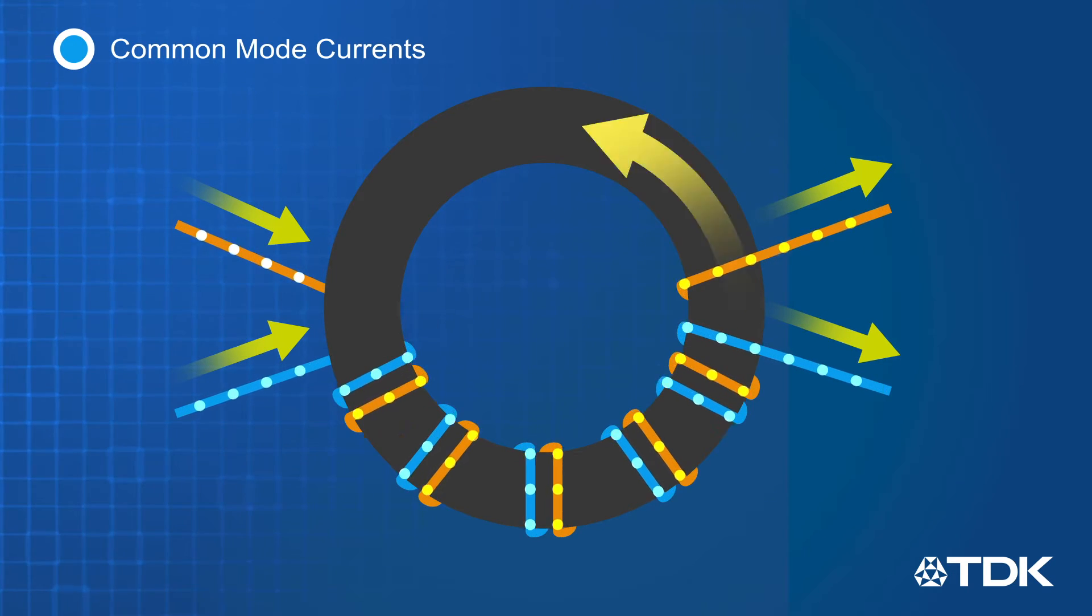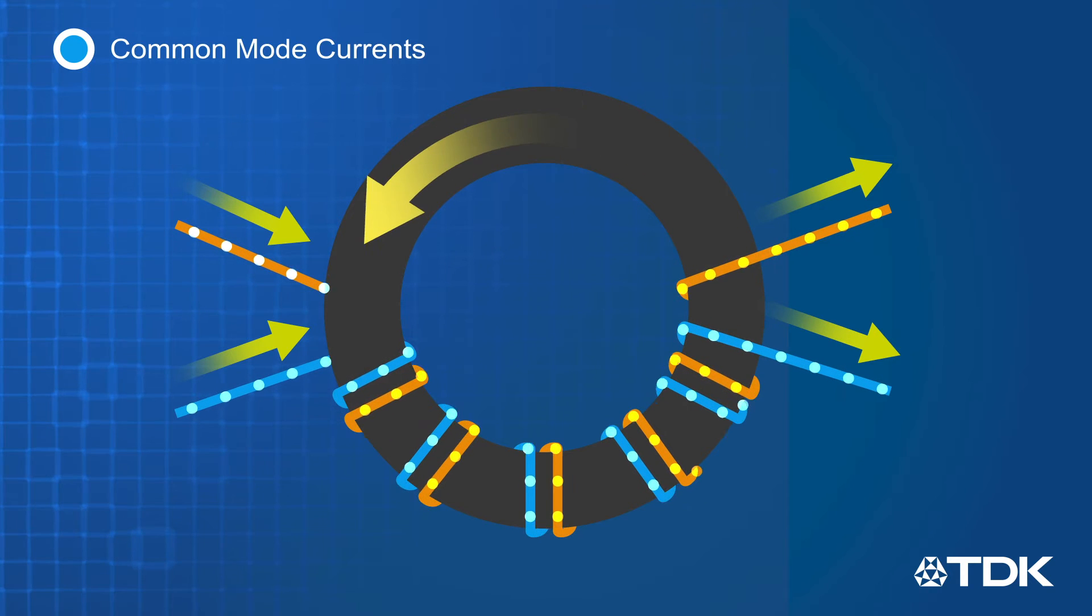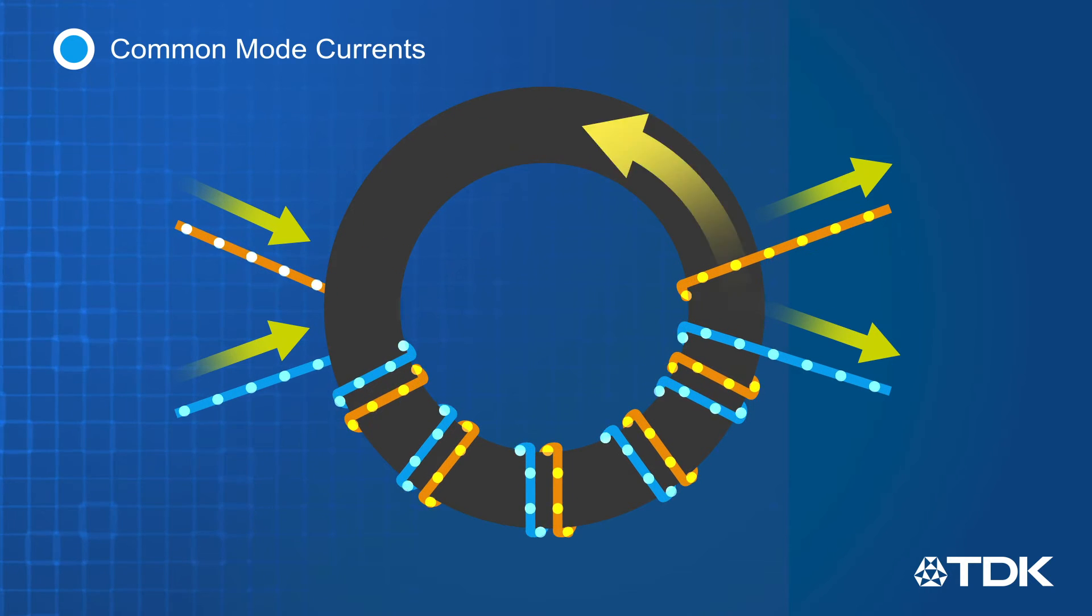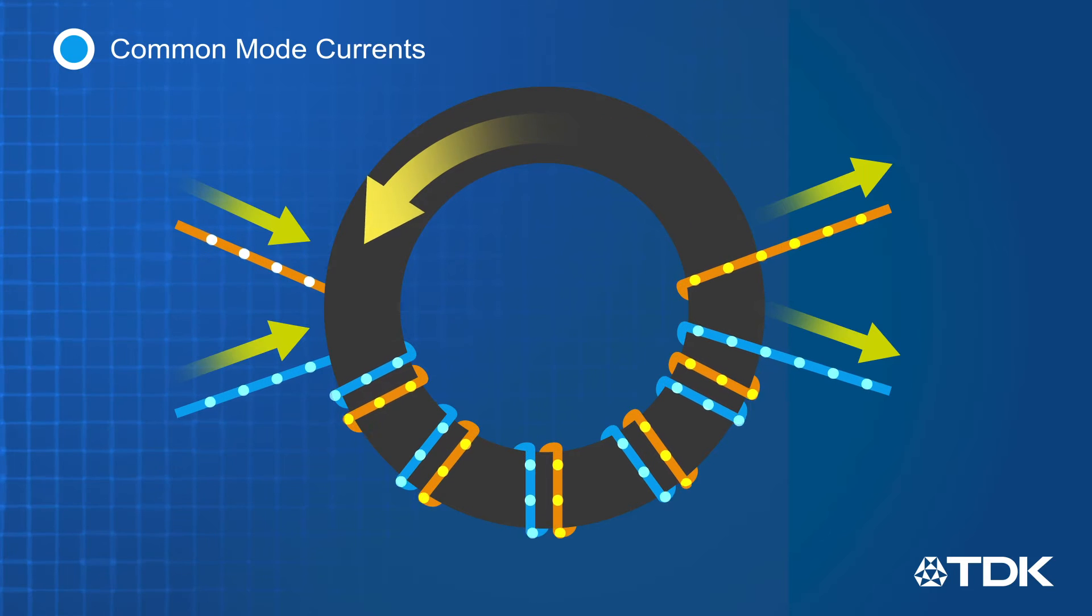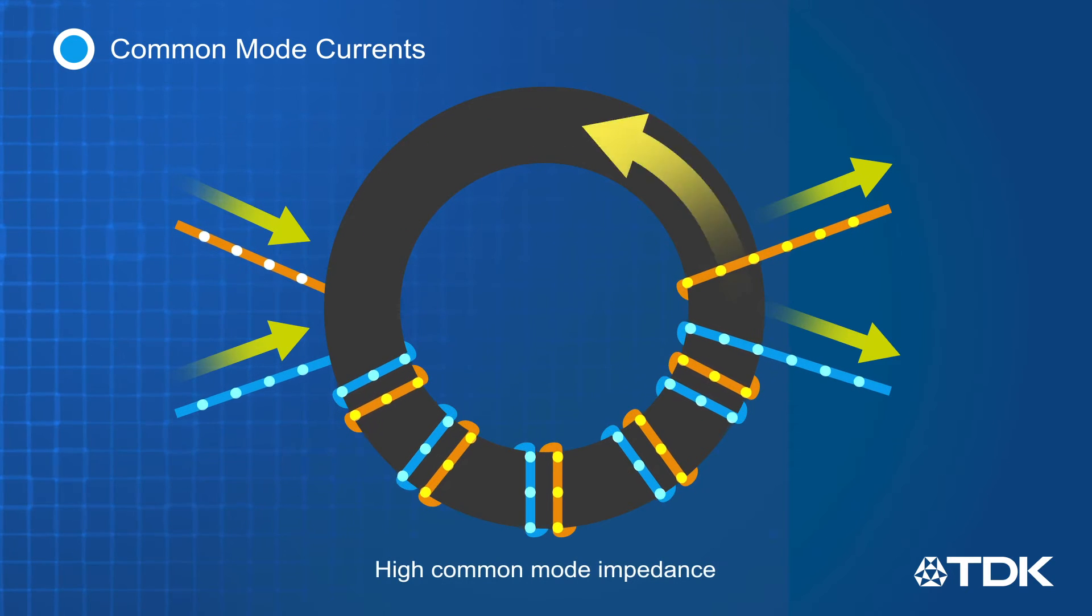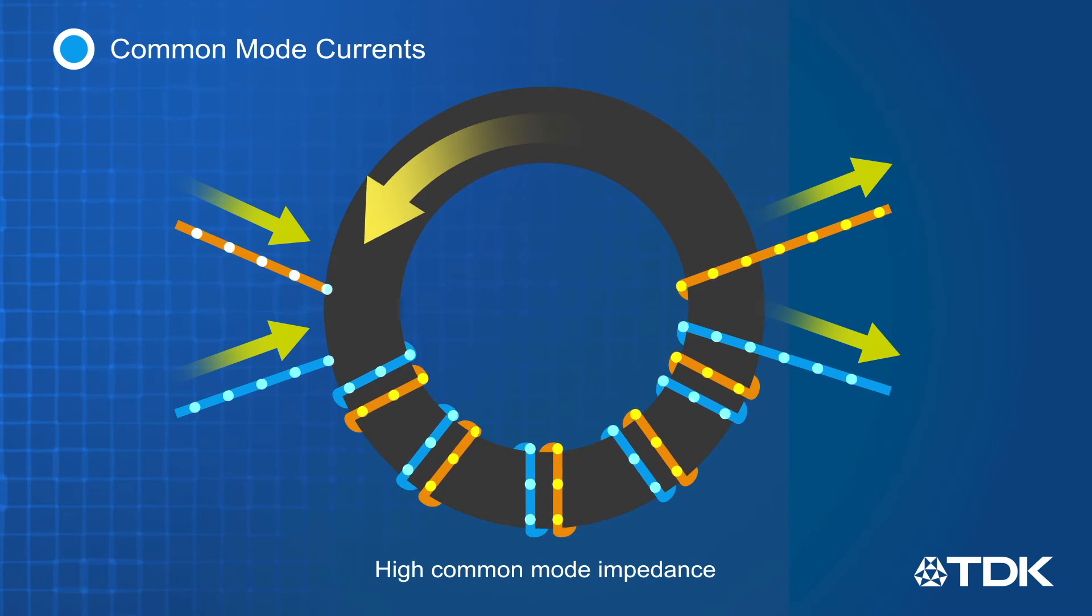The current flow through each wire creates a magnetic field, and because the current flows in the same direction for both wires, the magnetic fields add together. This results in a high common mode impedance and filters out common mode noise.